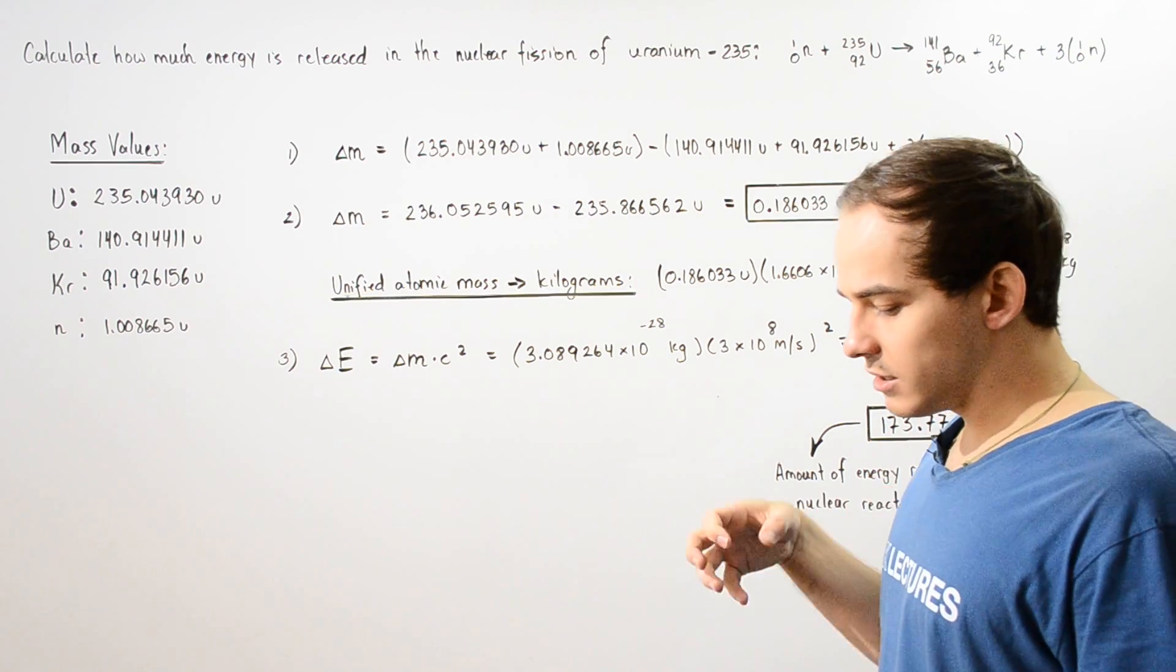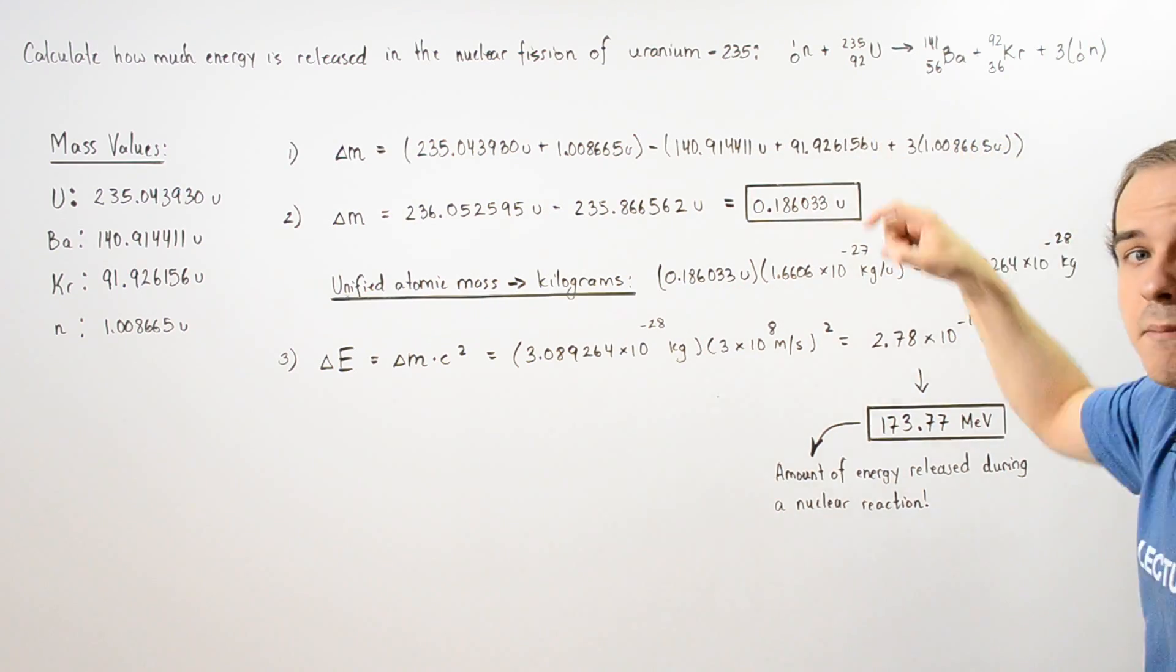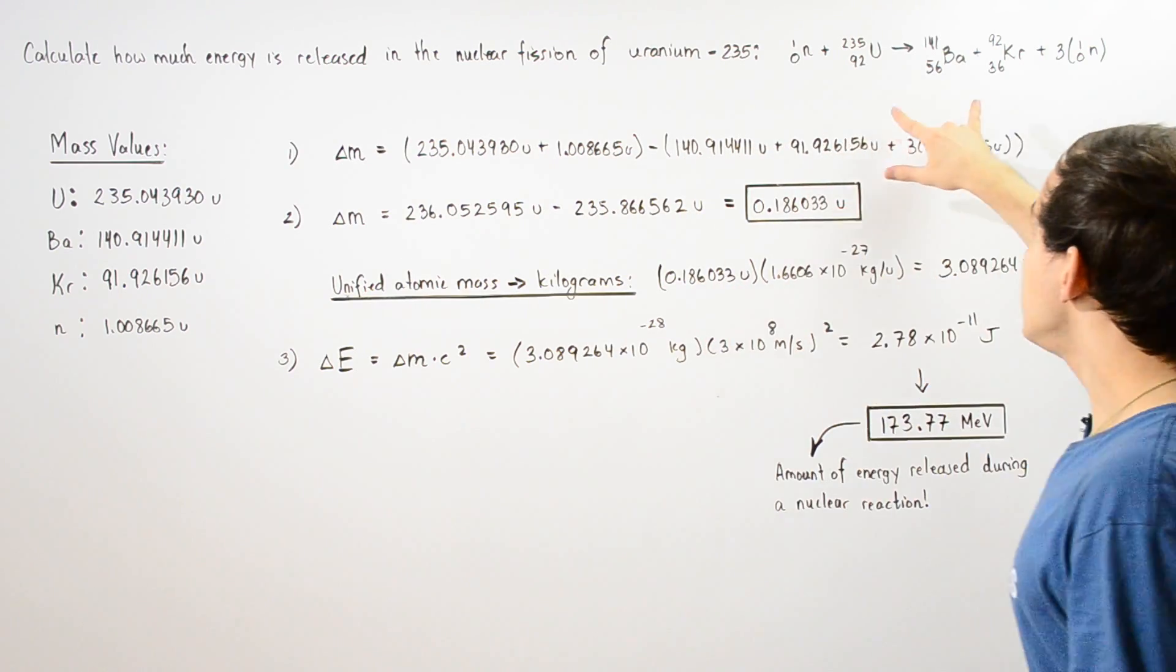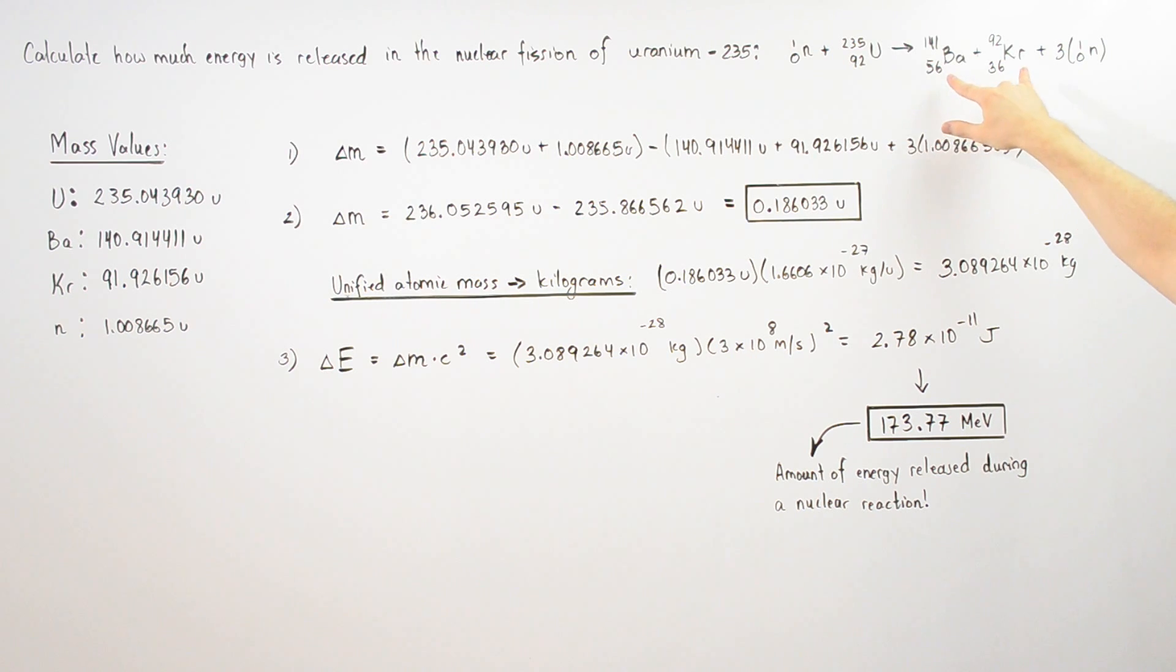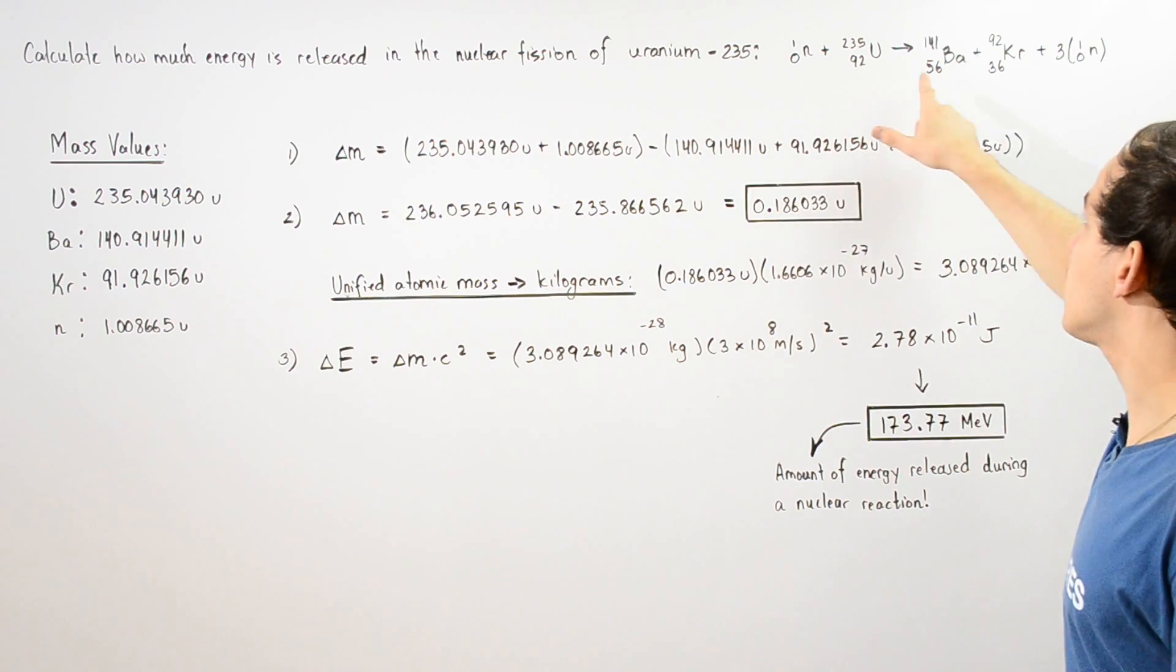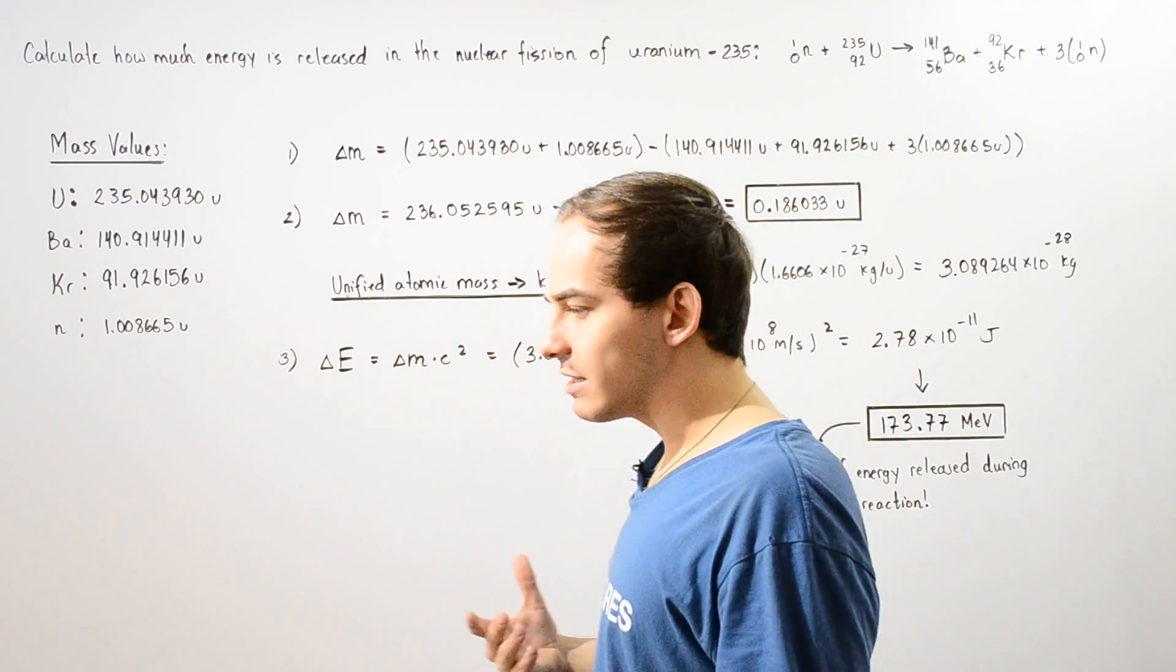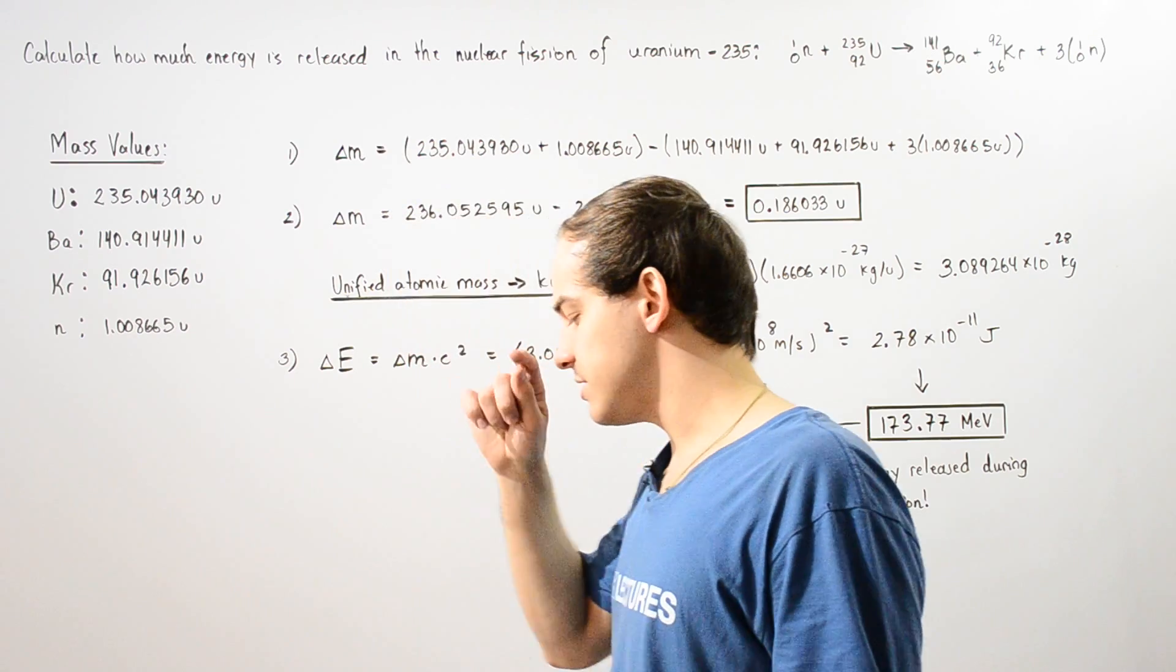So basically, a single neutron collides with the nucleus of our uranium atom, making it unstable, and that releases these two atoms, the barium and the krypton, as well as three individual neutrons. Now, knowing this information and the atomic masses of each one of our atoms and our neutron particle, we want to calculate how much energy is released.